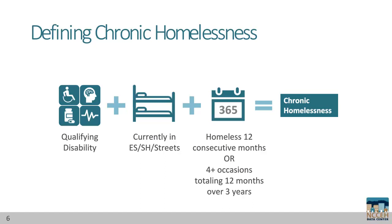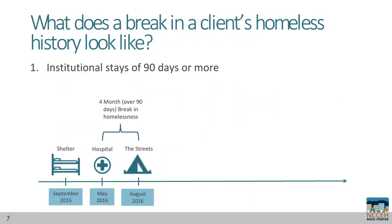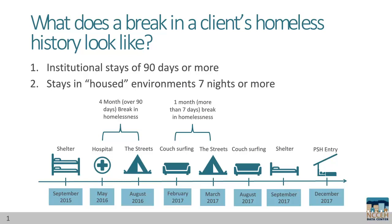What does a break in a client's homeless history look like for chronic homelessness? There are two types of breaks. One: institutional stays of 90 days or more — stays in a jail, rehab center, or hospital. In our example, our client entered the hospital after a stay in an emergency shelter and then went to the streets after being discharged from a long stay in the hospital. Two: housed stays for seven days or more. Stays in a housed environment for a week or more could mean a doubled-up or couch-surfing situation. In our example, the client was couch surfing for a month. According to the timeline, this client was homeless four times for a total of 19 months and was eligible for PSH in December of 2017.